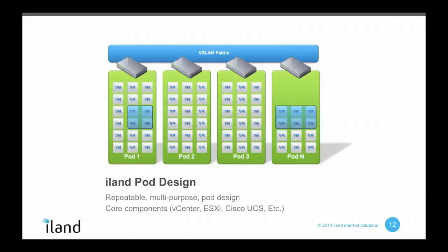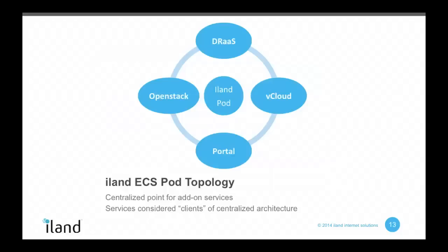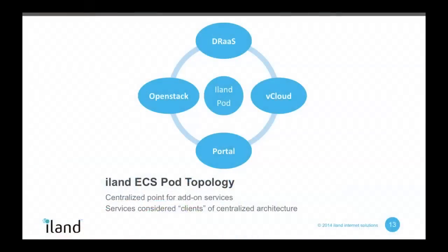This is a technology that's been around at VMware for a couple of years now. When we design an iLand pod, we consider all of the services around that pod as clients of the pod. Over the years, we've developed a repeatable and very reliable pod infrastructure using Cisco UCS and VMware. Our pods are almost considered commodities - everything is automated, configurations are automated, and we can plant them down in another geography very easily. The trick is getting the services that need resources from those pods to access them. Our DR as a service, VMware vCloud, our OpenStack portal - we treat those as clients, all accessing the APIs we're about to talk about.